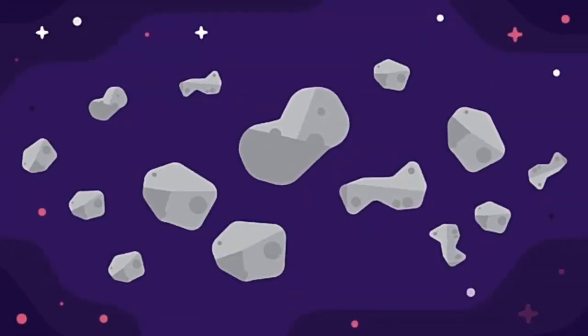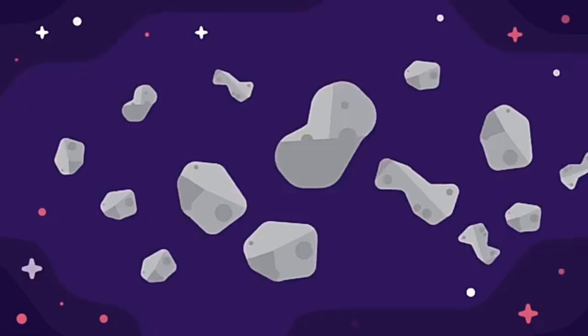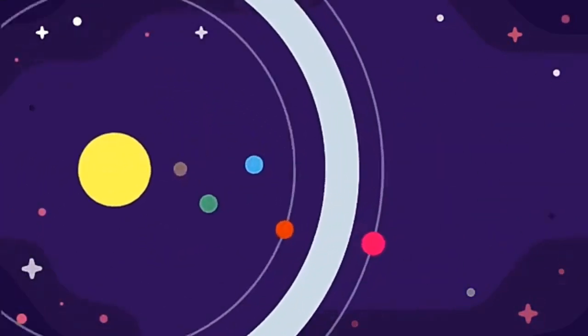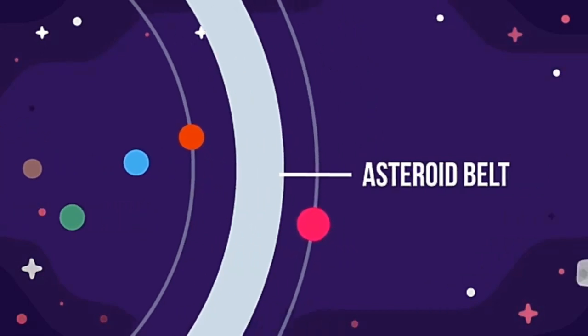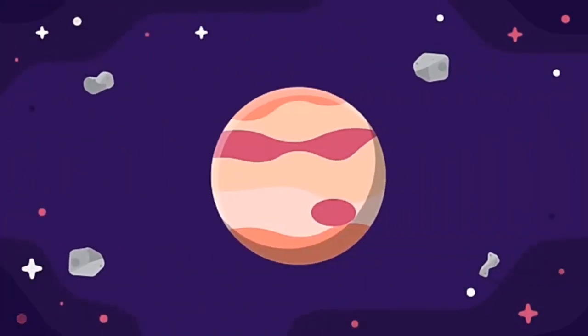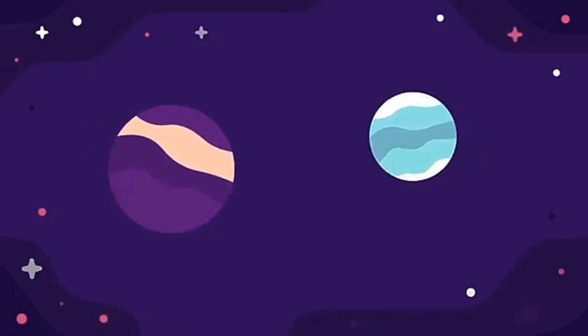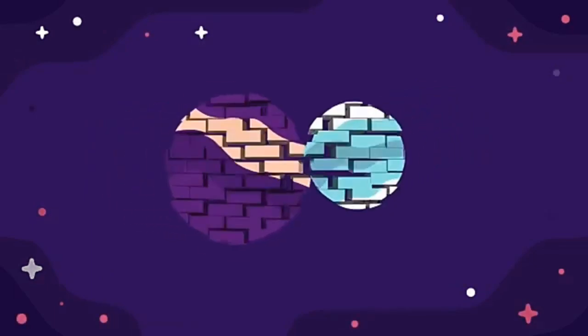Most asteroids are rod-shaped chunks of rock that orbit the Sun within the asteroid belt, which is between Mars and Jupiter. The asteroid belt is thought to be either leftover mass from a failed planet forming, due to the close gravitational pull of Jupiter, or the leftovers from a planet that broke up due to a collision.